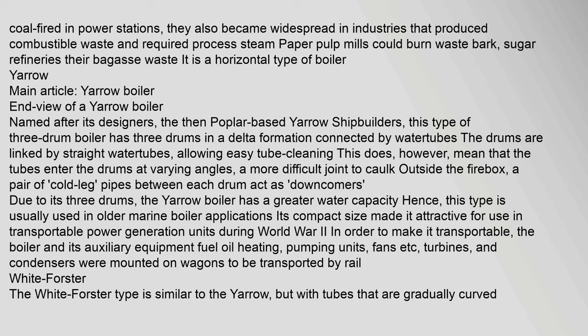To make the Yarrow boiler transportable, the boiler and its auxiliary equipment — fuel oil heating, pumping units, fans, turbines, and condensers — were mounted on wagons to be transported by rail. The White Forster type is similar to the Yarrow, but with tubes that are gradually curved. This makes their entry into the drums perpendicular, thus simpler to make a reliable seal.